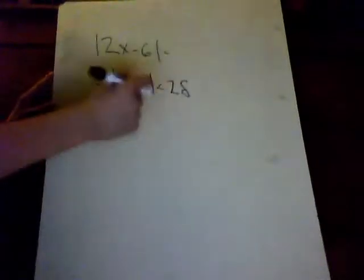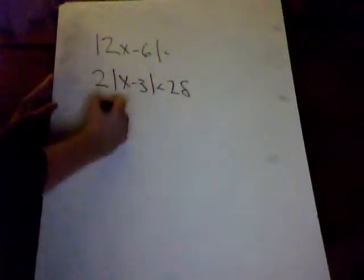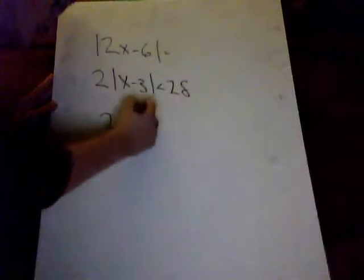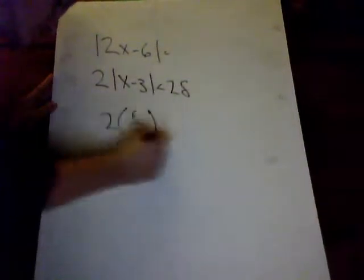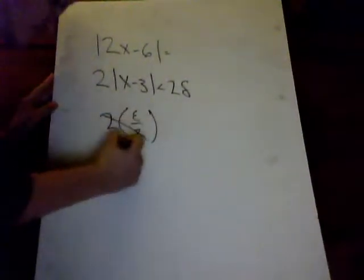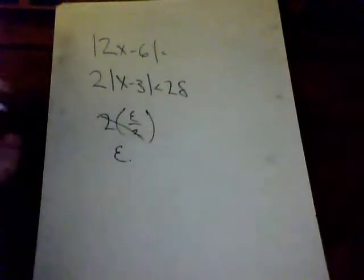And since delta is equal to epsilon over 2, let's write that out, times epsilon over 2, 2 and 2 cancel out, and we get epsilon, thus completing the proof.